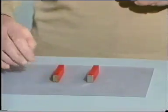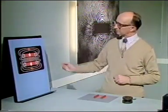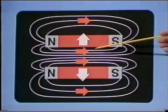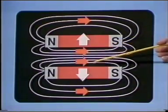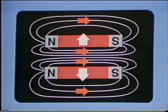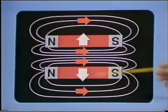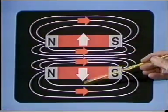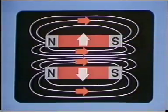Let's look back at the diagram to see how that might explain it. You see here the lines are apparently compressed, and they actually behave very much as though they are elastic and compressible, so that when lines of force get compressed like that they do represent the force of repulsion shown here by these white arrows.